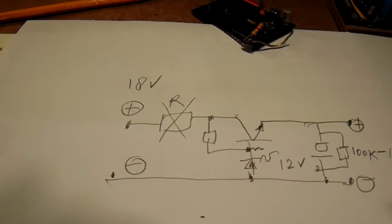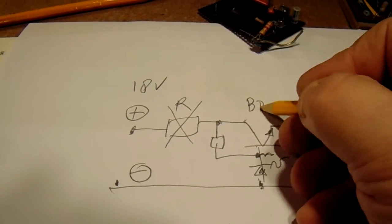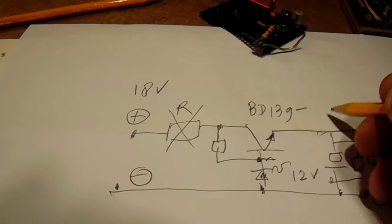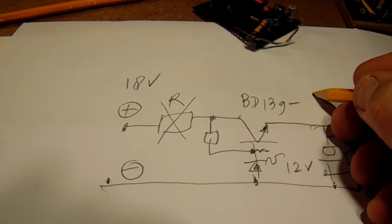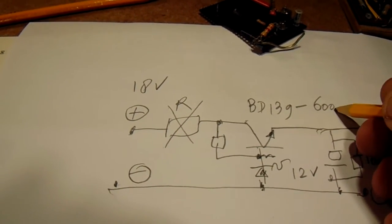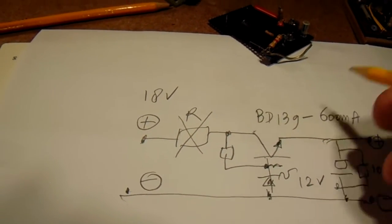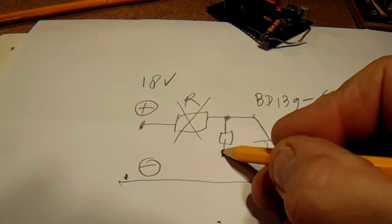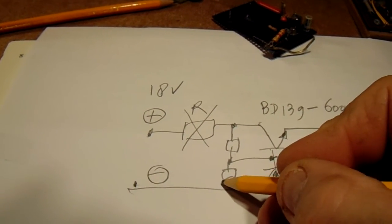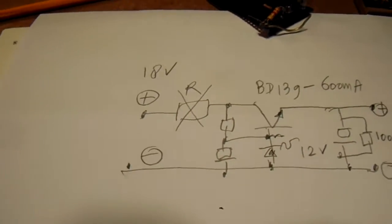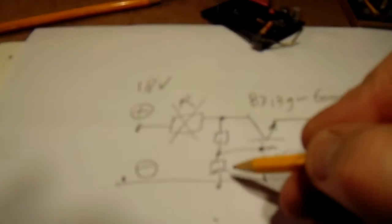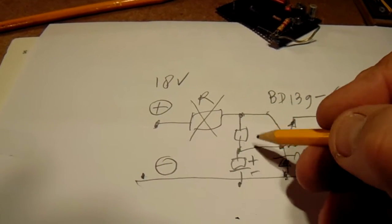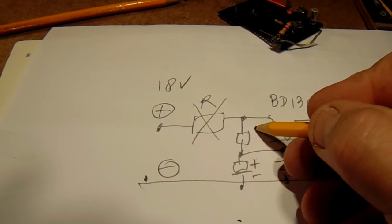And you have to use the BD139 up to say 600 milliampere output. And here a cap. This is a decoupling unit, also a stabilizing unit. And here the positive from the cap, here the negative, and here a resistor from 1k5.